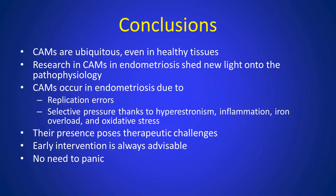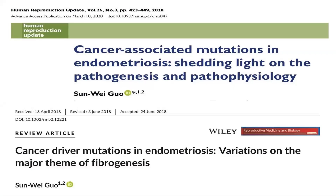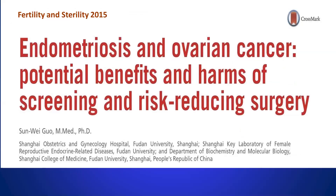In conclusion, cancer-associated mutations are ubiquitous, even in healthy tissues. Research in this area sheds much-needed light onto pathophysiology. CAMs occur in endometriosis due to replication error and selective pressure, thanks to hyperestrogenism, inflammation, iron overload, and oxidative stress. Their presence poses a therapeutic challenge, and early intervention is always advisable, but there's no need to panic. For more information, you can read some of these publications I wrote about cancer driver mutations.